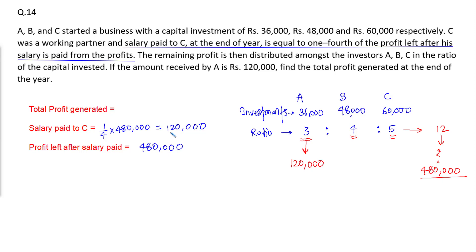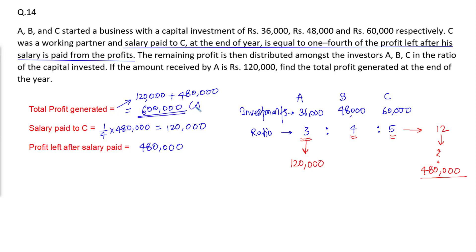The profit left after C's salary is paid is 4,80,000. We need to find the total profit generated at the end of that year. Total profit = salary of C (1,20,000) + profit left (4,80,000) = 6,00,000 rupees. So our answer is 6 lakh rupees. This is how we can solve this.